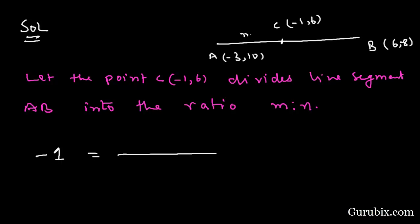We shall write m here, we shall write n here, and we shall multiply m with 6, then we have 6m. We shall multiply n with -3, then we have -3n. Here we have m plus n.